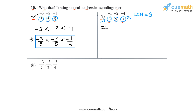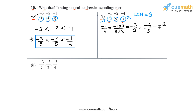Minus 1 by 3 can be written as minus 1 times 3 over 3 times 3, which gives us minus 3 by 9. Similarly, minus 4 by 3 multiplied above and below by 3 gives us minus 12 by 9. So if we now compare the numerators of the three numbers, the first number has a numerator of minus 3, the second has minus 2, and the third has minus 12.